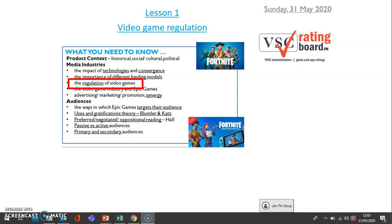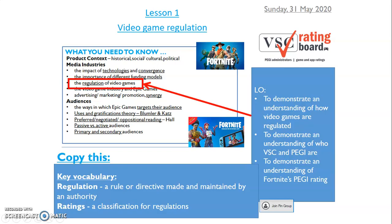Our first lesson on video games is video game regulation. What you can see on the screen now is a summary of everything that you will need to know about video games. We focus on Fortnite, but we also talk about video games in general — how they're rated, how they're regulated, and the use of audience theories. By the end of this first lesson, you should be able to demonstrate an understanding of how video games are regulated, who the VSC and PEGI are, and Fortnite's PEGI rating.